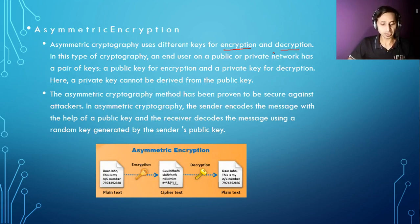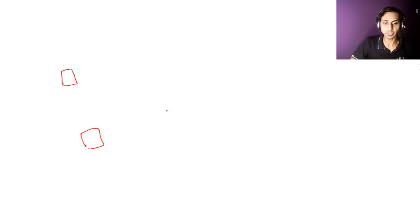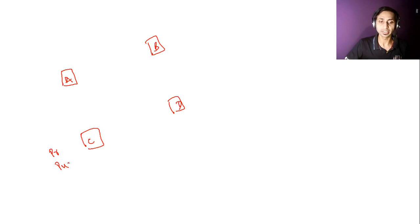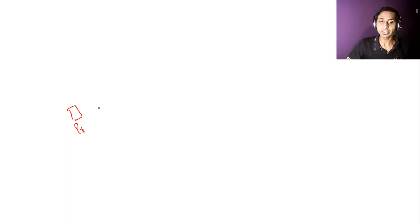Let me show you with a graphical presentation. For example, we have a connection of multiple computers — let's say computer A, computer B, computer C, and computer D. When you use asymmetric encryption, each machine will generate two types of keys: one is known as a private key and one is known as a public key. Each machine keeps its private key with itself, and the public key is shared with others. So computers B, C, and D will all have the public key of computer A.